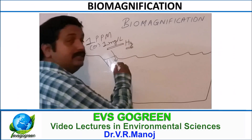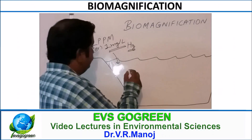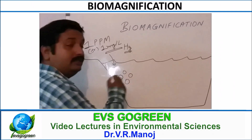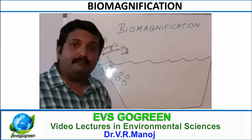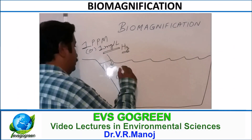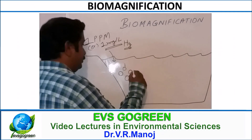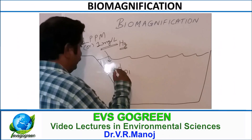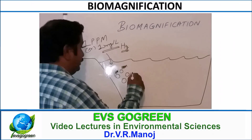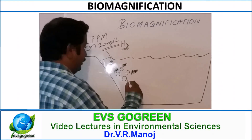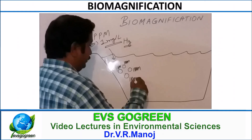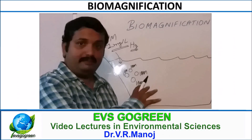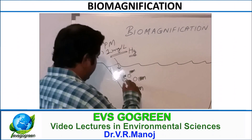Let us assume that this 1 ppm is being absorbed into the body of four small microscopic plants called phytoplanktons. Each of them will assimilate around 1 ppm of the pollutant into their body. So the concentration of the pollutant is 1 ppm, and each of these phytoplanktons has absorbed 1 ppm.